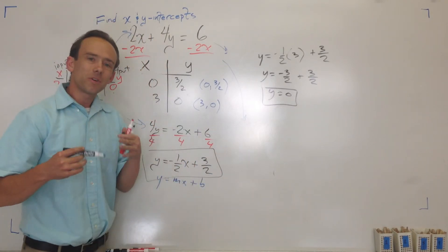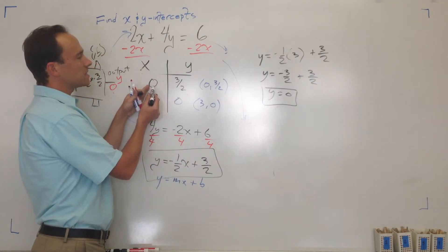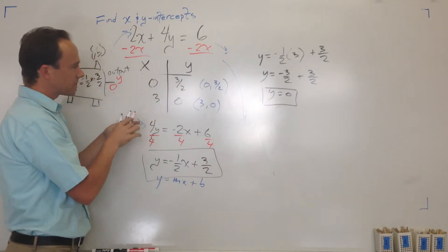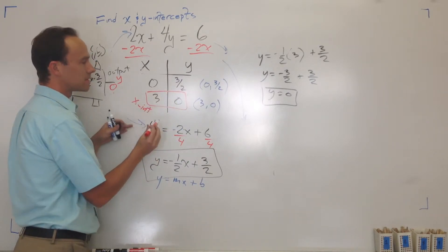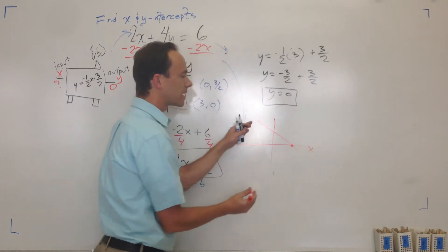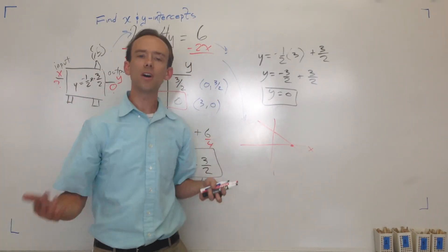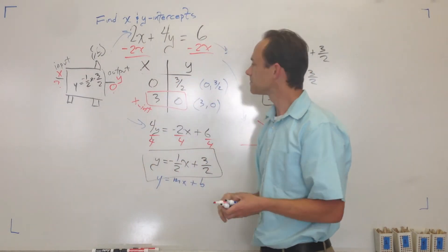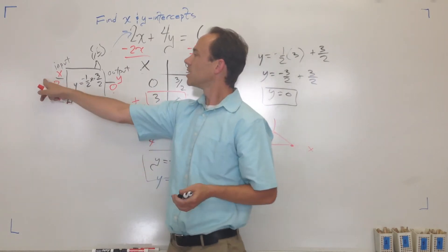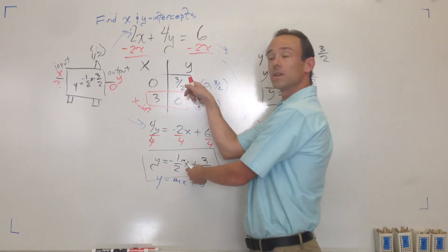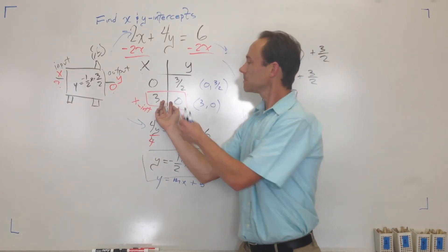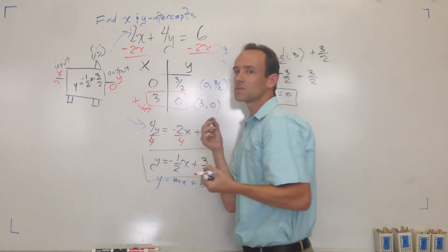So here's the recap on x and y intercepts: just substitute. You want the y-intercept — make x zero and solve for y. You want the x-intercept — set y equal to zero and solve for x. Y equals zero is where the graph intercepts the x-axis. You can make a table: put zero in for x and question mark for y, and vice versa.